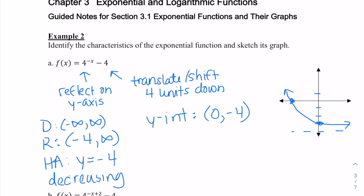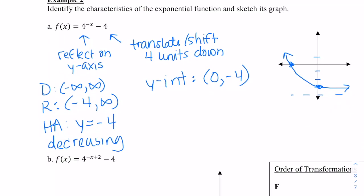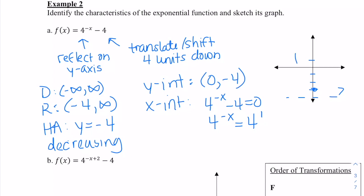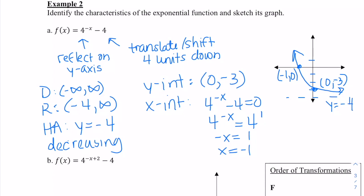There will be an x-intercept. To find it, we set the equation equal to 0: 4 to the negative x minus 4 equals 0, so 4 to the negative x equals 4. We know that's 4 to the 1, so negative x must equal 1, meaning x equals negative 1. So this point is (negative 1, 0). And the y-intercept — plugging in 0 — is (0, negative 3), not negative 4. That was the y-intercept, and negative 4 is the asymptote.